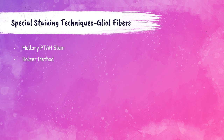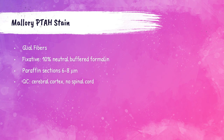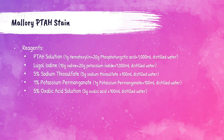There are two special staining techniques for glial fibers: the Mallory PTAH stain and the Holzer method. The Mallory PTAH stain is for glial fibers. Fix in 10% NBF, cut at 6–8 microns. Quality control is cerebral cortex tissue — spinal cord cannot be used. Reagents include PTAH solution, Lugol's iodine, 5% sodium thiosulfate, 1% potassium permanganate, and 5% oxalic acid solution.